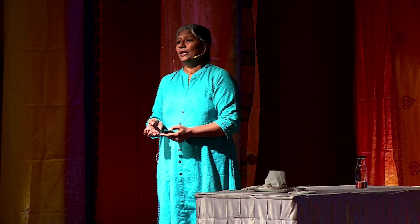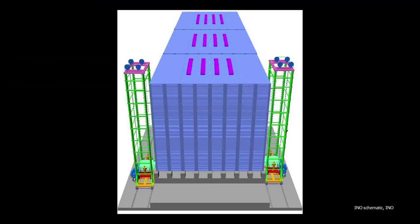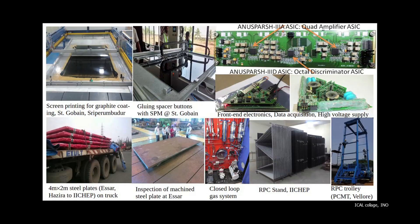The detector that will be located in INO is a magnetized one. When built, it will be the most massive magnet in the world — 50,000 tons of magnetized iron, 30,000 active detector elements, more than 4 million channels of electronics built with precision technology. The whole detector is the size of a five-story building, and we believe it will be completely indigenous. Every part of it — R&D, design, and development — done in some lab across India.